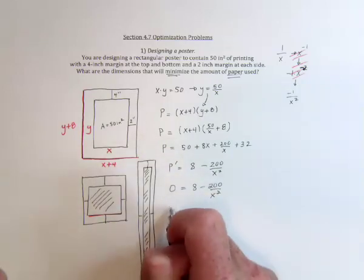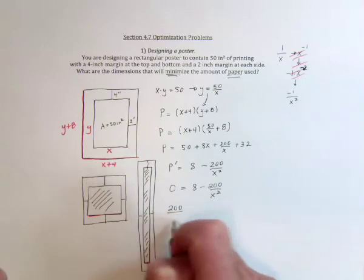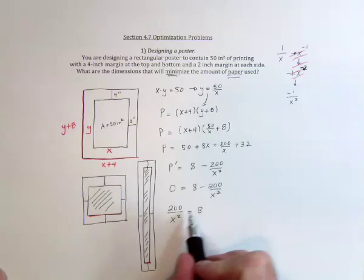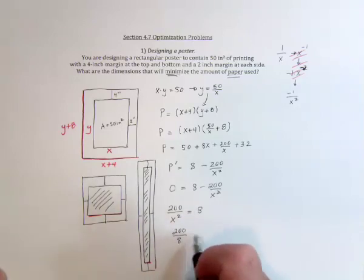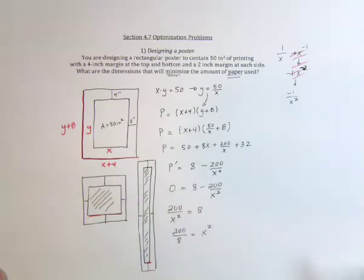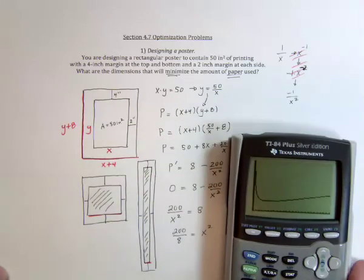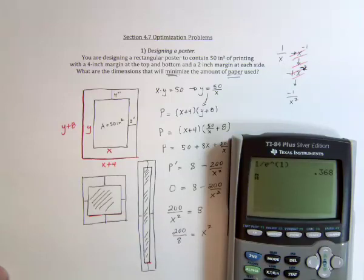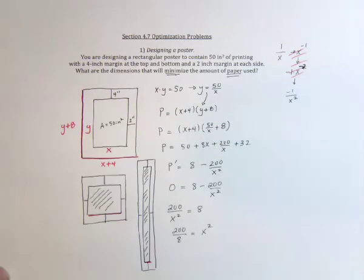So move this over to the left-hand side, positive 200 over x squared. And then cross-multiply, or basically have these two guys change places, so it's going to be 200 divided by 8. And then take the square root. Usually we would take positive and negative square root, but in this case we only need positive square root of 200 divided by 8. So x should be 5.